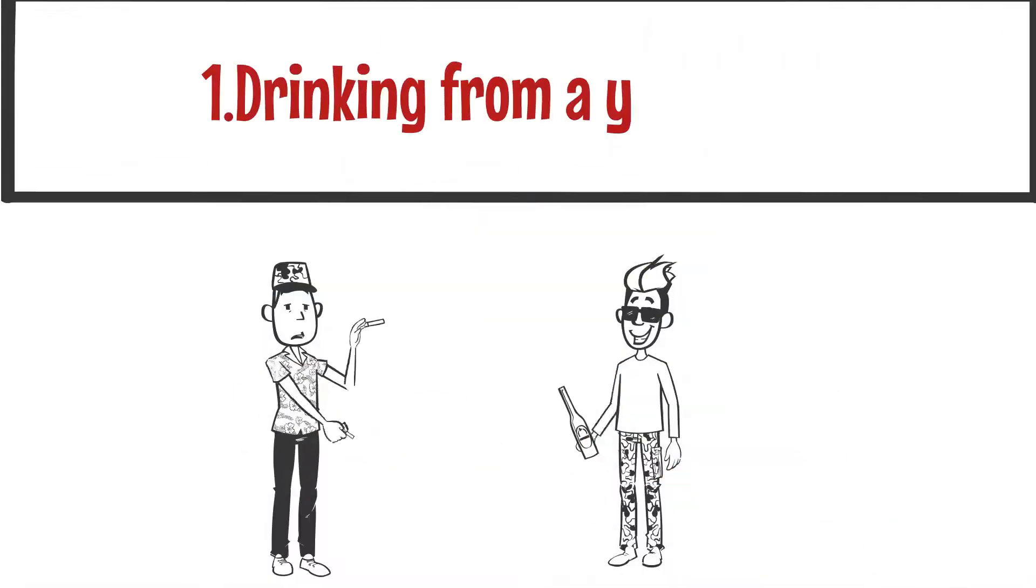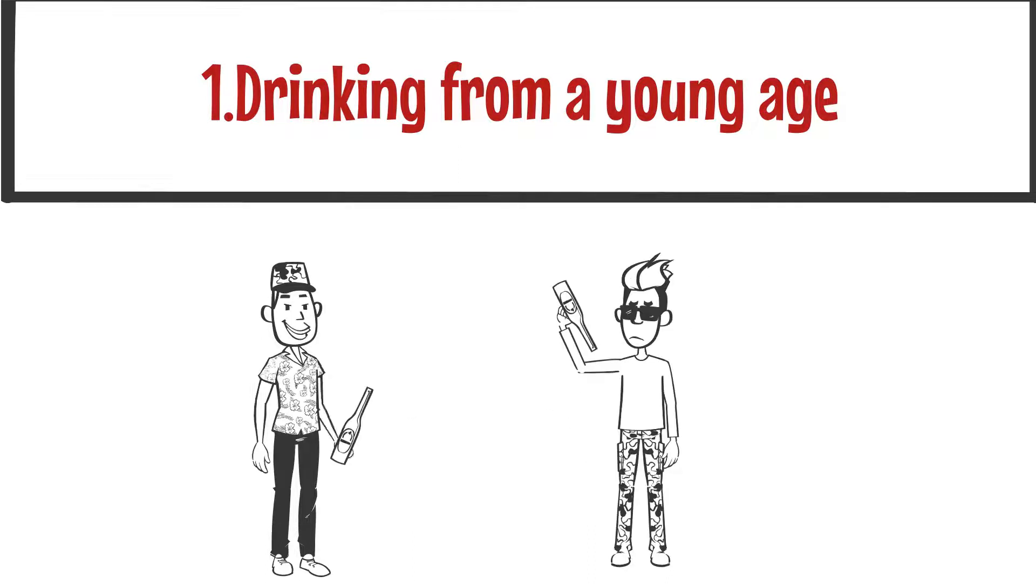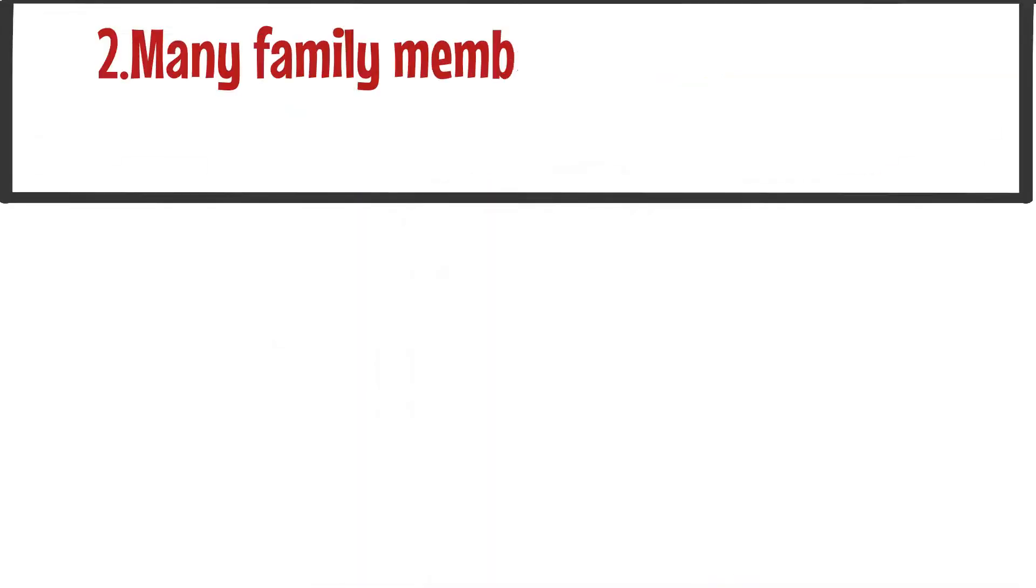Number one, drinking from a young age. It is statistically known that the younger a drinker starts drinking, the greater the risk of becoming addicted. For every year earlier the person starts drinking, the chance of becoming addicted is simply increased by 5%.